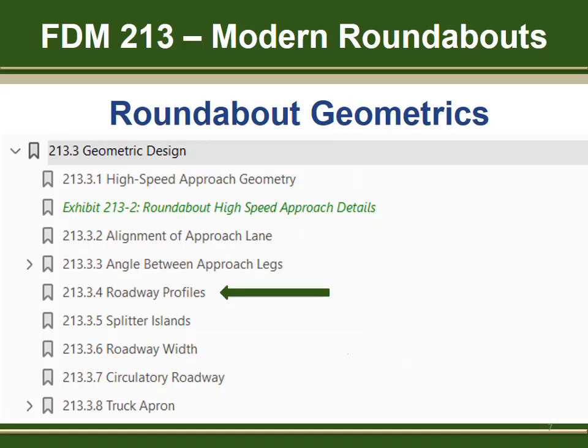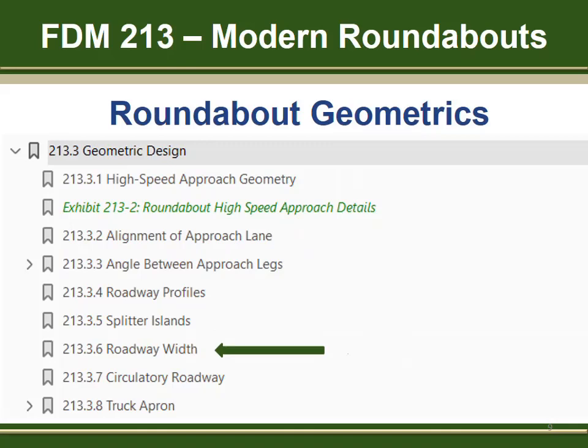It is understood that a flat profile is not always possible. FDM 213.3.5 provides requirements for the splitter island width and length, adopted from NCHRP 672 and placed in this section as hard criteria. FDM 213.3.6 provides a minimum roadway width of 15 feet, measured face-to-face of the curb, and also requires enough pavement to keep the design vehicle off of the gutter pan.